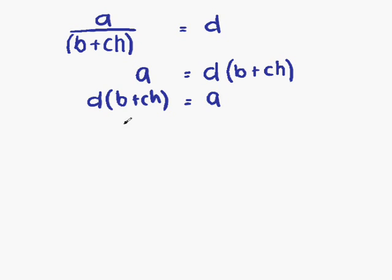Our next step is to multiply out this bracket. That will make things easier in the long run. So first of all, D times B is DB plus D times CH, which is DCH. That is equal to A.